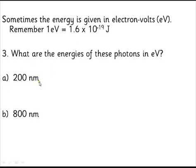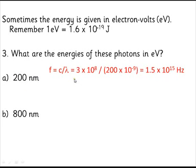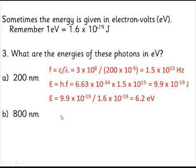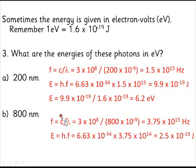Same sort of process again. If we've got a wavelength, we first of all turn the wavelength into a frequency. Then we turn the frequency into an energy in joules. And then we just have to divide by this conversion factor here to get the energy in electron volts. Once again, another one just for you to check if you want to.